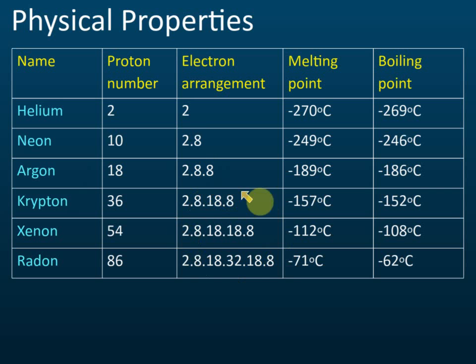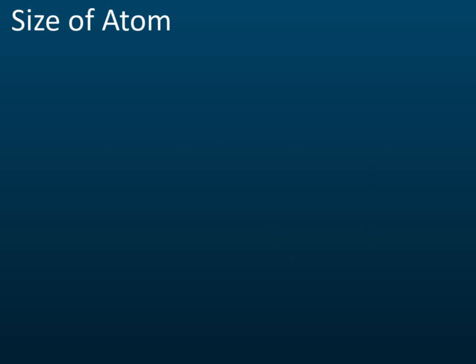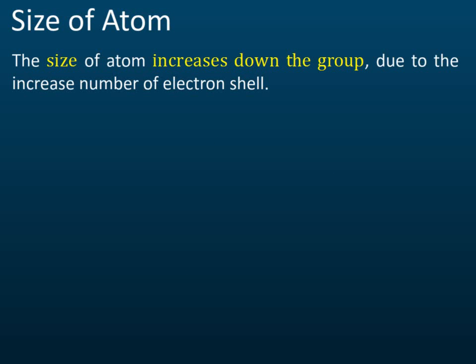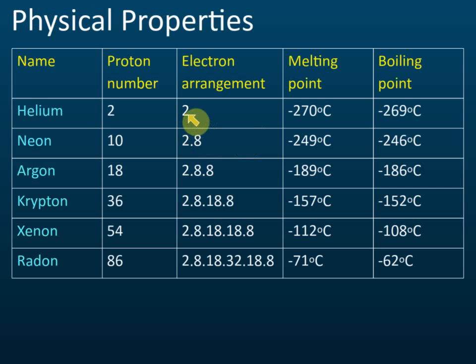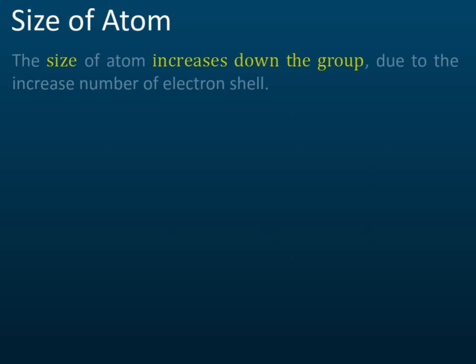All group 18 elements have eight valence electrons, except the first one. Regarding atomic size, it increases down the group due to the increase in electron shells. From the table, helium has two shells, then three, four, five, and six shells going down — so as the number of shells increases, the size of the atom increases.